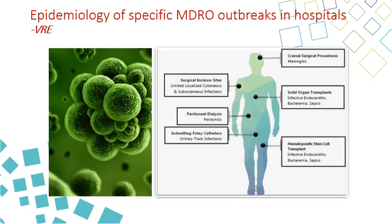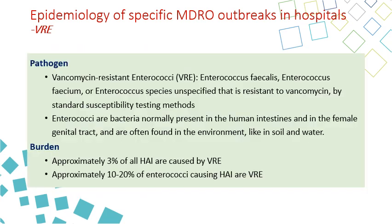The next MDRO is VRE — vancomycin-resistant enterococci — which includes Enterococcus faecalis, Enterococcus faecium, and Enterococcus species that are resistant to vancomycin by standard susceptibility testing. Enterococci are bacteria normally present in the human intestine, the female genital tract, and also in the environment like soil and water. VRE represents 3% of all HAI, and approximately 10–20% of enterococci causing HAI are VRE.